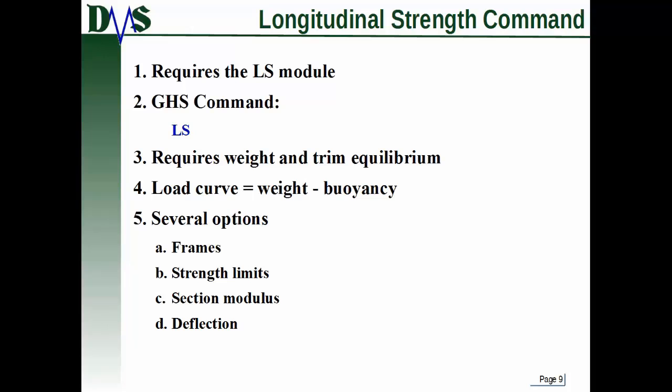Now, the reason it's simple is because the command itself is simple. But you have to do several things to set it up beforehand. And that's what all of those distributed weights were about. Once you've got that set up, you just type LS. That's the command in GHS. LS for longitudinal strength. Now, it does require that you need to be in weight and trim equilibrium already. But once that's already done, you type LS and GHS. First thing it does is it builds the load curve. Which is the weight minus the buoyancy at each one of your section locations.